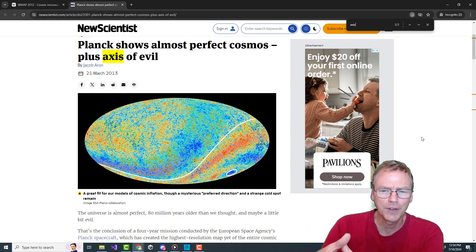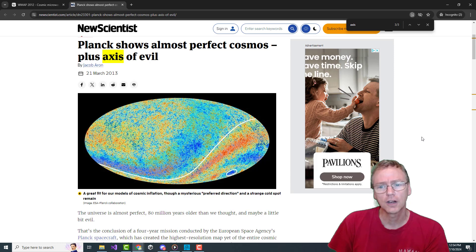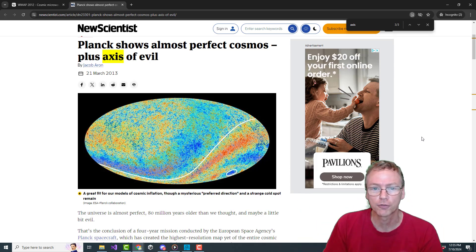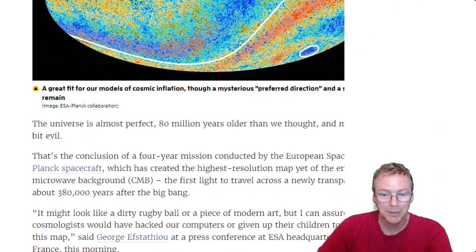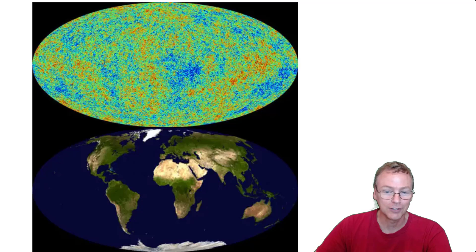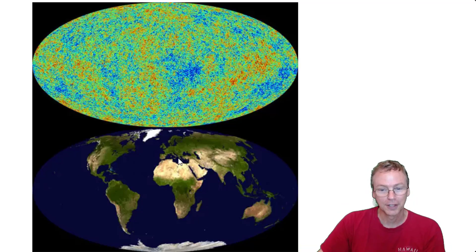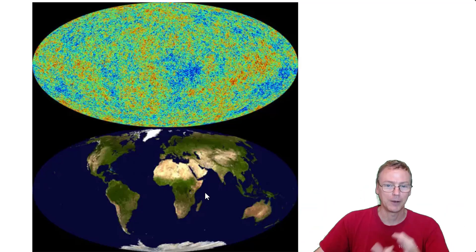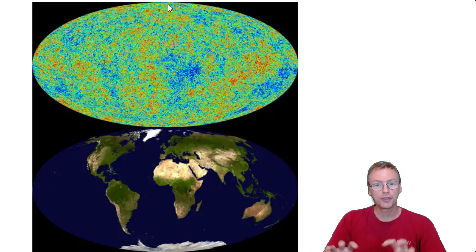Let's take a closer look at the sphere and try to understand why it is a sphere and what we're really looking at. Here's an article from New Scientist — I will link that down in the description. Perhaps this image here really illustrates it best. This is the Earth unwrapped as that same oval shape that we see in the CMB. This is where the North Pole is, aligned with the Earth.